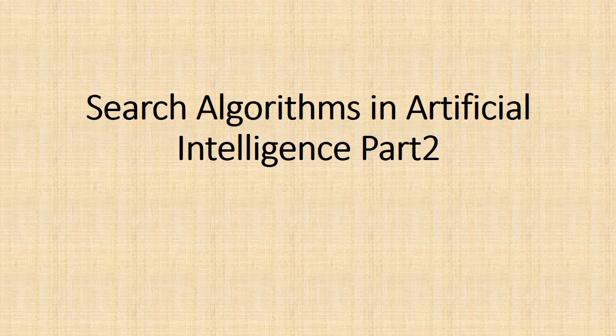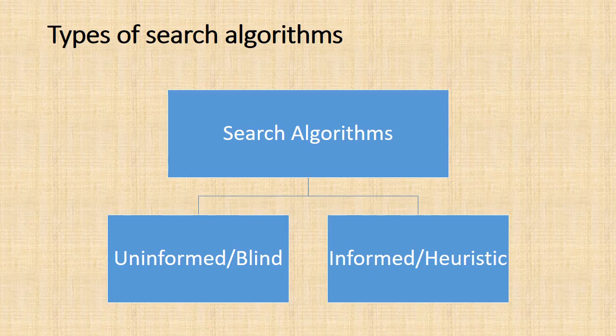Welcome to the presentation on search algorithms in artificial intelligence. There are two types of search algorithms: one is uninformed search or blind search, and second is informed search or heuristic search.